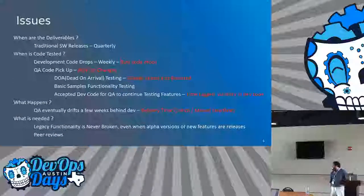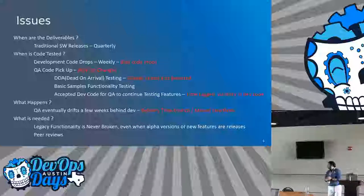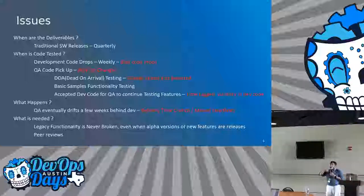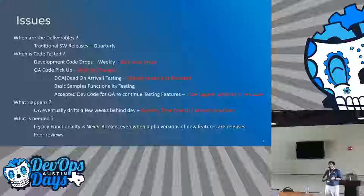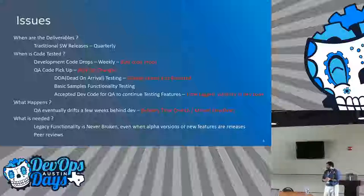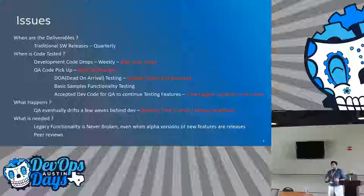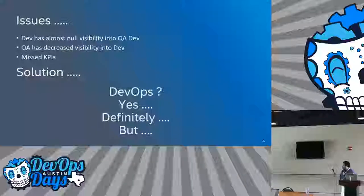Everything leads to missed KPIs. One of the things always important to managers is that even when new features are coming up and haven't yet been tested, none of the legacy code should be broken — that came in as a very strong requirement, because developers can still ship code out to customers. Peer reviews are also required — somebody else needs to look at the code. The solution, of course, is DevOps.